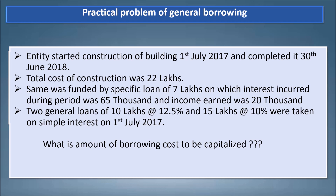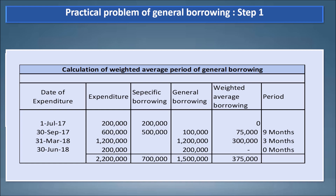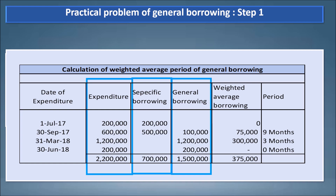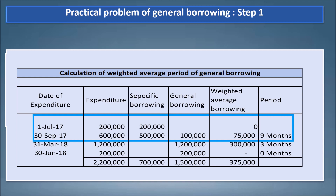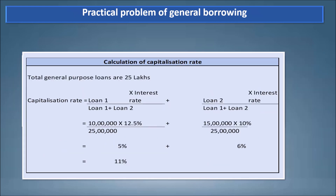We will see the expenditure pattern in the solution. The first step is to calculate the weighted average period of general borrowing, for which we divide expenditure into specific and general borrowing, then identify the period for which each expenditure is outstanding. The weighted average borrowing is calculated as period multiplied by expenditure divided by the total period of the loan till the capitalization date. Expenditure incurred on 1st July and 30th September was out of the specific borrowing of 7 lakhs, so the general borrowing remaining is 1 lakh for a period of 9 months: 1 lakh × 9/12 = 75,000. Similarly, weighted average borrowing is derived for the other two expenditures, giving a total weighted average borrowing of 3 lakhs 75,000.